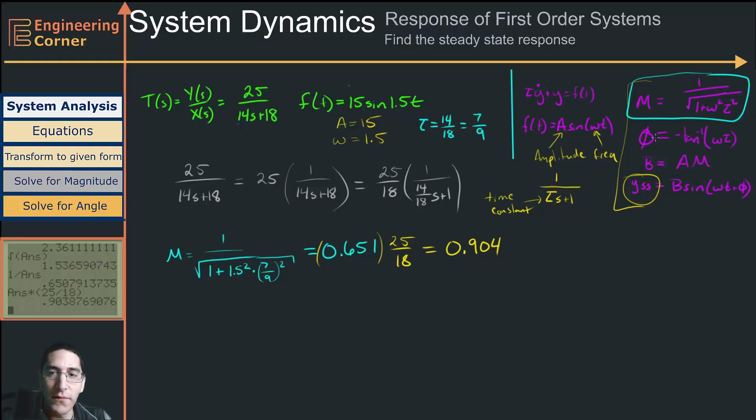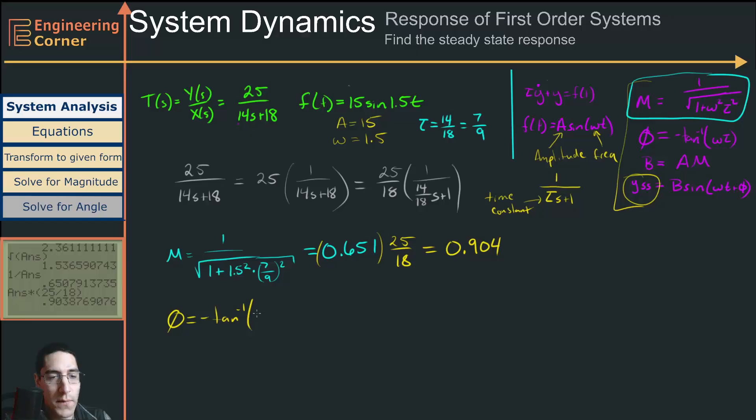So now I have my magnitude. Next, I want to solve for my angle. My angle theta is equal to minus the inverse tangent of omega, which is 1.5, times tau, which is 7 ninths.